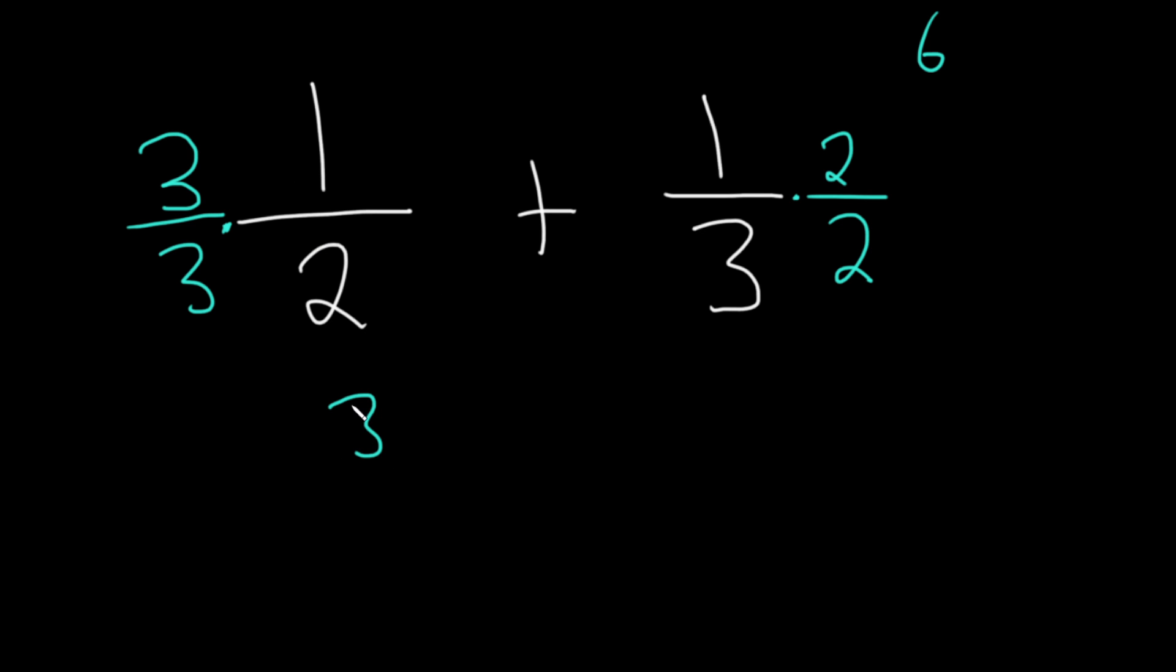So the 3 times 1 is 3. And 3 times 2 is 6. And then we have our plus. 2 times 1 is 2. 2 times 3 is 6. See how I did that? You basically just multiply straight across up top and on the bottom.